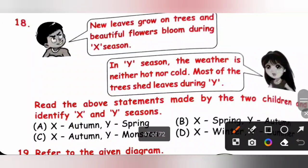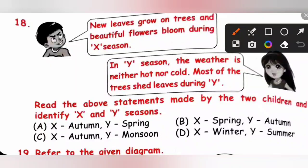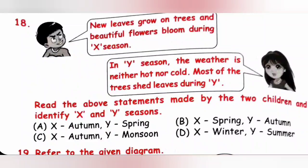Question 18: New leaves grow on trees and beautiful flowers bloom during X season — so X is spring. In Y season, the weather is neither hot nor cold and most trees shed their leaves — so Y is autumn. X is spring and Y is autumn. Option B is the correct answer.